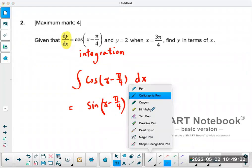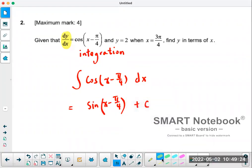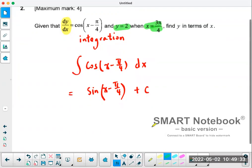Now the second part of the question is about finding the value of C. They said if y equals 2 when x is equal to 3π over 4, so you're going to substitute the values of x and y into the function to solve for the value of C.